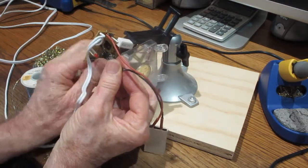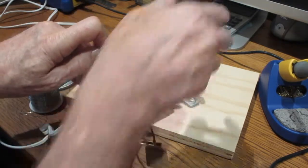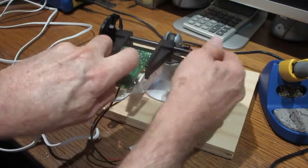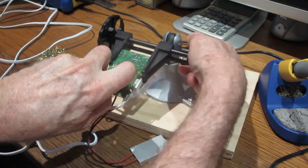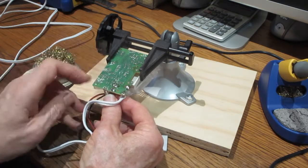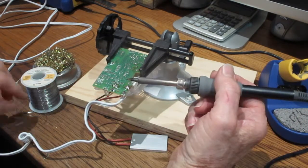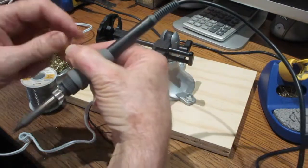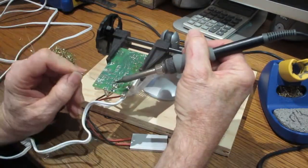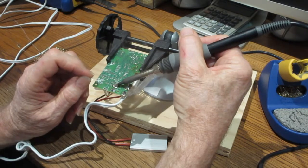Next, insert the black lead into the second solder pad. Solder the black lead to the circuit board.